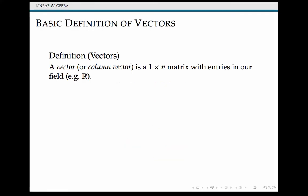One of the core objects that we study in linear algebra is something called a vector. A vector is just a 1 by n matrix, so it's a specialization of something we've already looked at. Just as when we dealt with other matrices, all of the entries in our vector are going to be drawn from some field, for example, the real numbers.